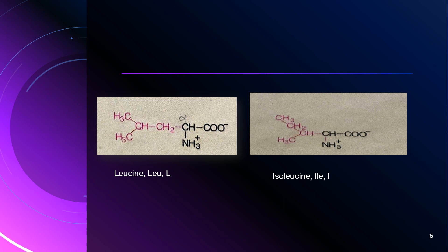So these five amino acids — glycine, alanine, valine, leucine, and isoleucine — are included in the category of amino acids with aliphatic side chain. That is the first category in the structural classification.